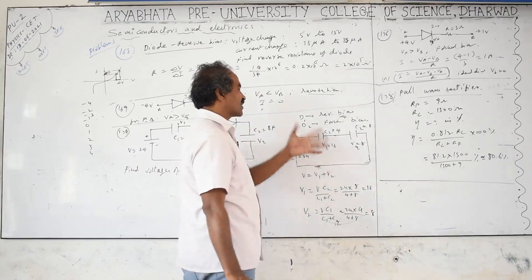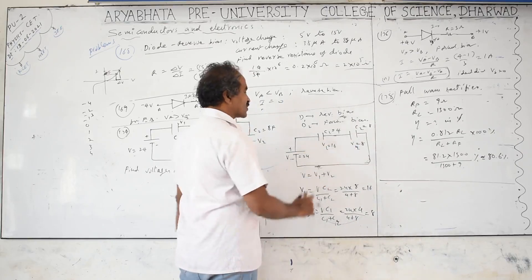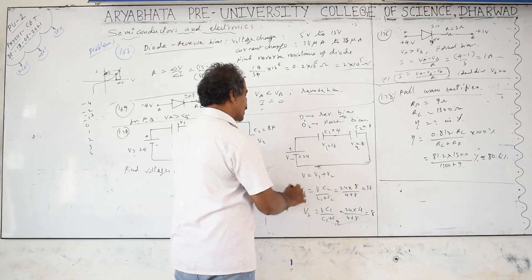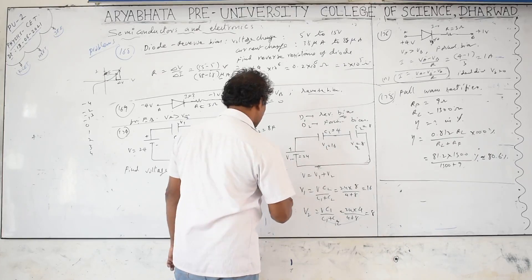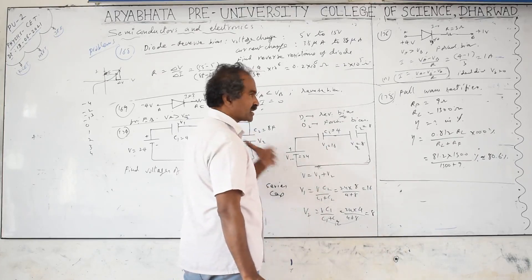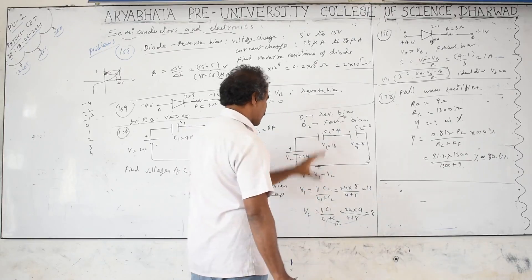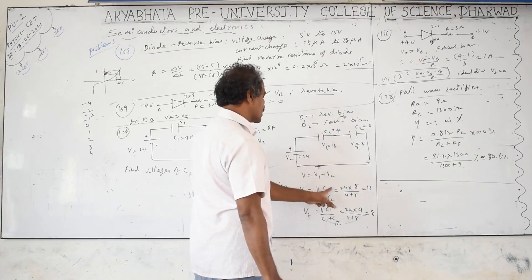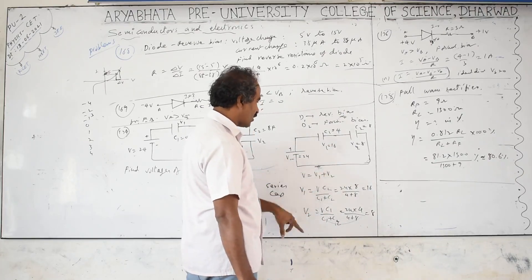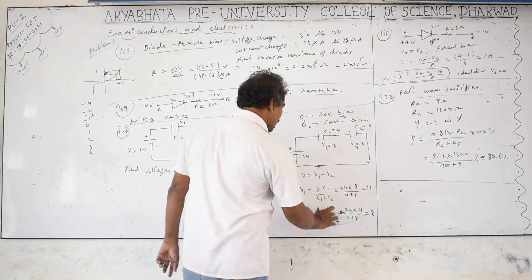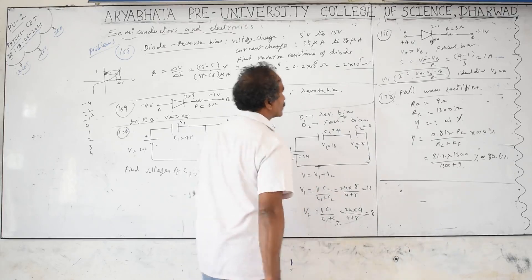For series capacitors, the voltage across each is: V1 = V × C2/(C1+C2) = 24 × 8/(4+8) = 24 × 8/12 = 16 V, and V2 = V × C1/(C1+C2) = 24 × 4/12 = 8 V. Check: V1 + V2 = 16 + 8 = 24 V. Note: for series capacitors the voltage divides inversely — unlike series resistors where V1 = V × R1/(R1+R2).